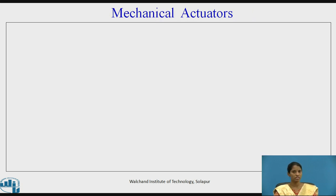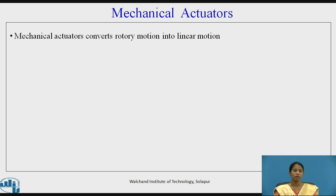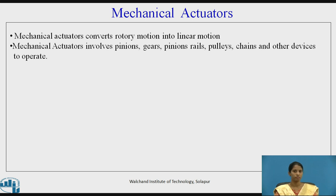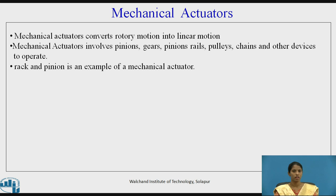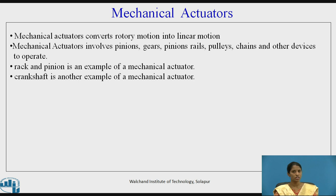The next type is mechanical actuators — the name itself indicates that mechanical force is required to set the system into motion. Mechanical actuators convert rotary motion into linear motion and involve pinions, gears, rails, pulleys, chains, and other devices to operate. A rack and pinion is an example of mechanical actuators, and a crankshaft is another example.